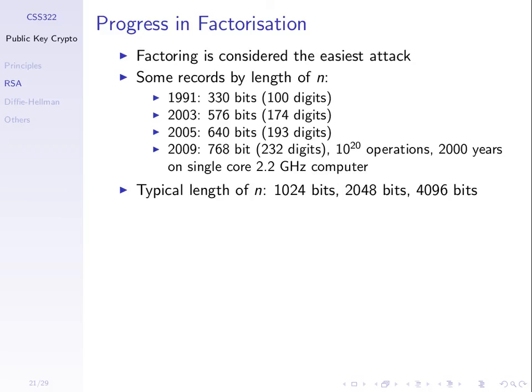Going from 1991 to 2009, factoring capability increased by about 400 bits — from around 330 to 768 bits. Even if this were linear, 2,048 bits would still be safe well beyond 2027. In any case, the relationship is not linear — adding bits makes it much stronger. Currently there are no known successful factorisations of 1,024-bit n, but 2,048 bits is recommended just to be safe, though many still use 1,024.